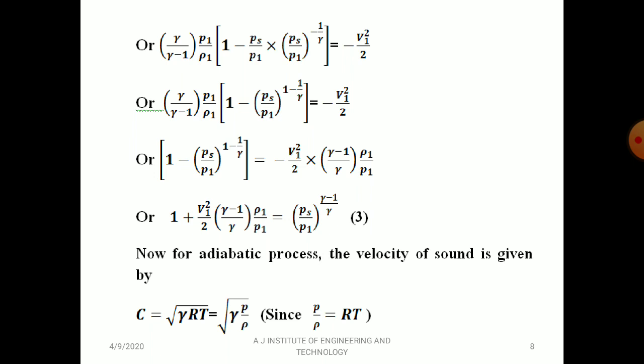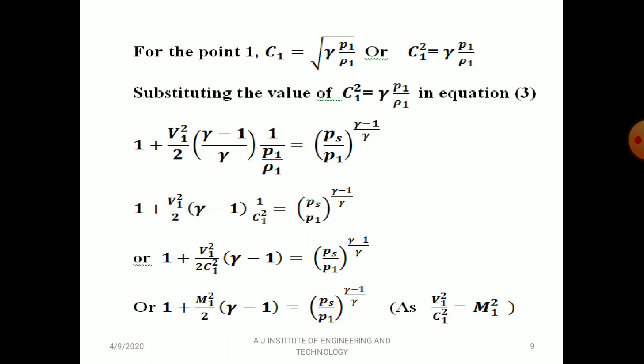For the adiabatic process, the velocity of sound is C = √(γP/ρ) = √(γRT). For point 1: C1 = √(γP1/ρ1), so C1² = γP1/ρ1. Substituting C1² = γP1/ρ1 into expression 3: 1 + V1²/2 · (γ−1)/γ · ρ1/P1 = (Ps/P1)^((γ−1)/γ).